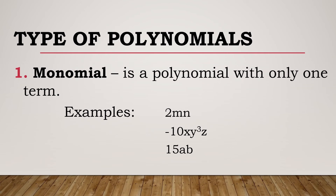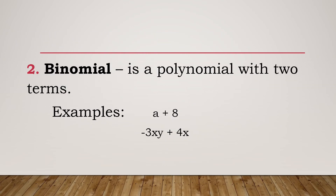We also have types of polynomials. The first type is a monomial — a polynomial with only one term, meaning there is no plus or minus sign after the expression. For example, -10xy³z is a monomial because even though the literal coefficient is complex, there are no additional terms. 15AB is also an example of a monomial.